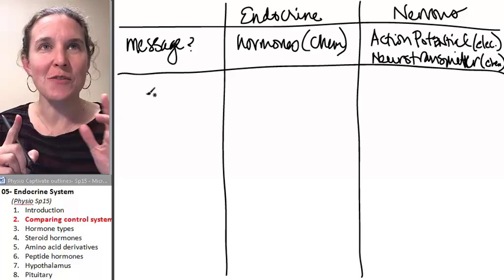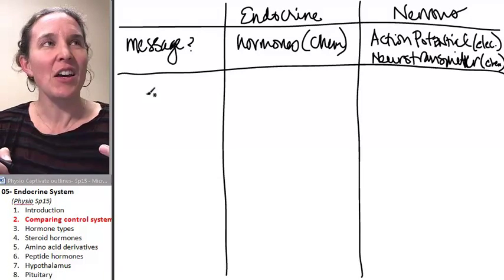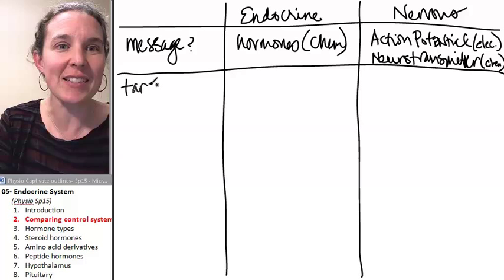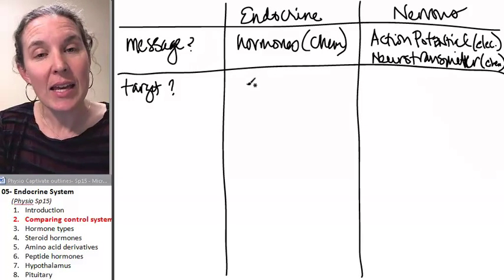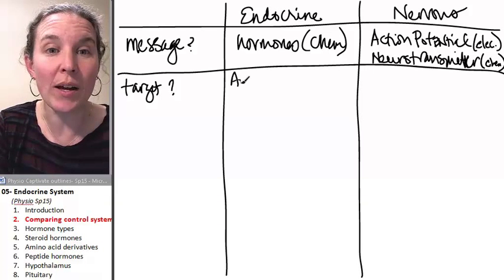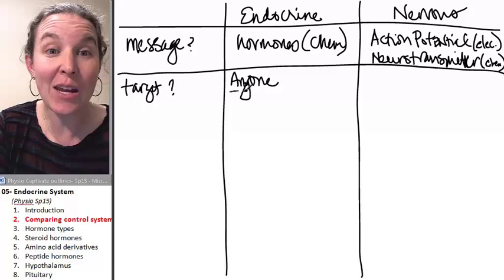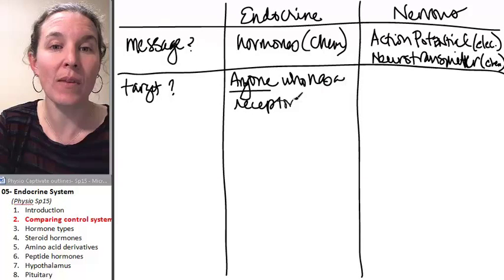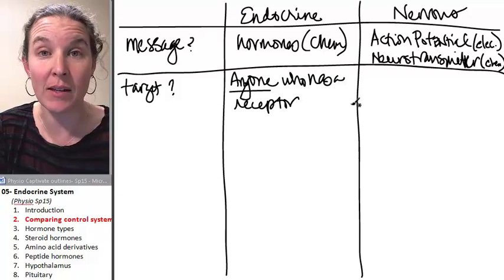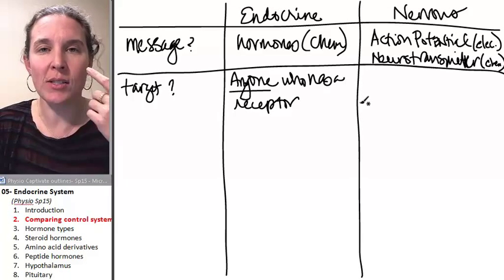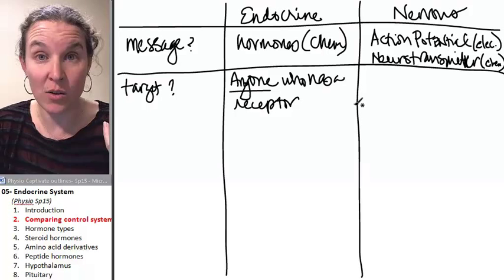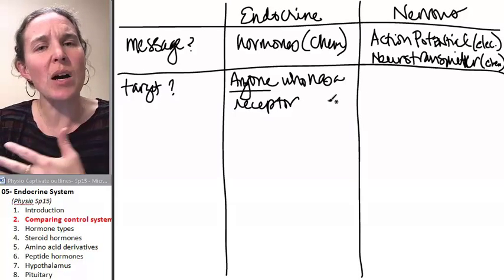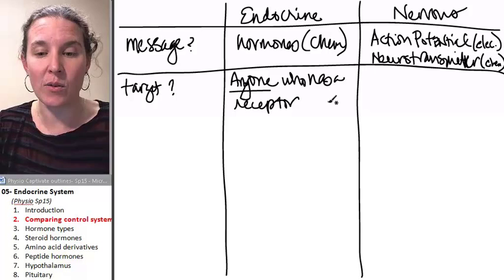Now, there's a couple of differences as far as who's getting the message? Talk about the effector. Who is the target? In the endocrine system, the target is anyone who has a receptor that matches the hormone that got dumped in. So if a nose cell has the receptor, then the nose cell can be the target. If the stomach has the receptor, then the stomach can be the target. So it's a general, the endocrine system acts generally.